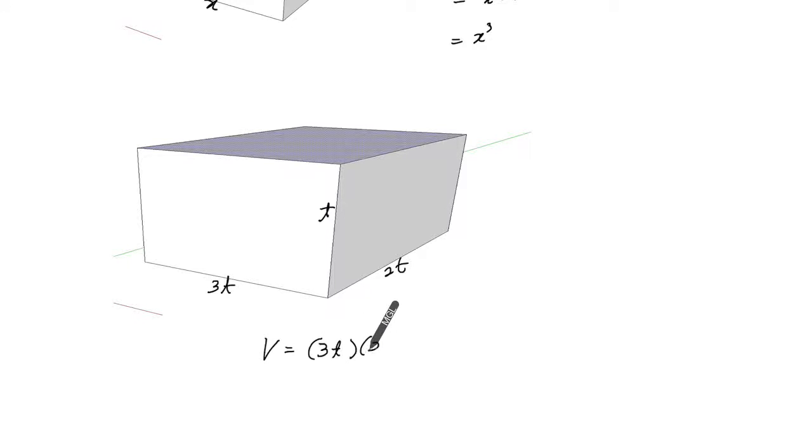3t multiplied by 2t and times by t. So you can multiply numbers first. 3 times 2 is 6. And how many t's do we have? 3. So it's 6t cubed for the volume.